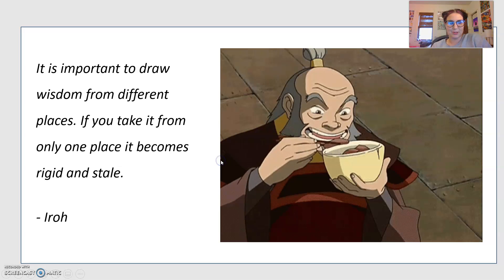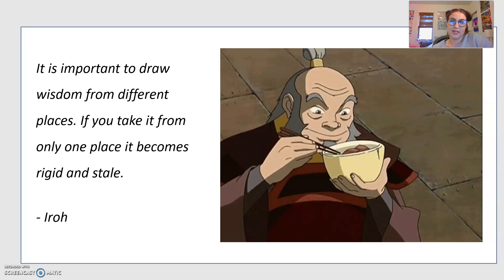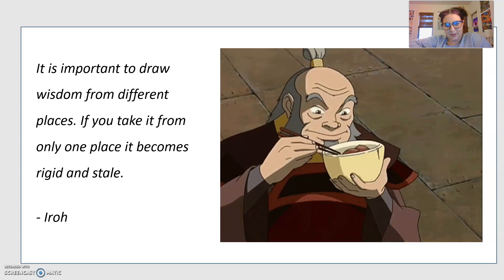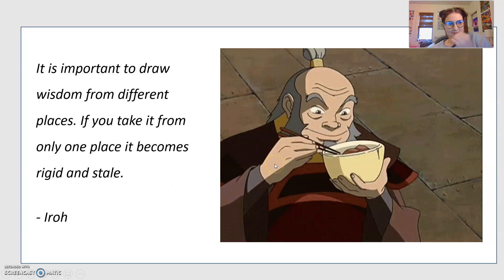I wanted to start today with some words of wisdom from Uncle Iroh from Avatar the Last Airbender. He said it is important to draw wisdom from different places — if you take it from only one place, it becomes rigid and stale. I interpret this as: don't just go to one place for all your answers. Wisdom can come from all different parts of life, maybe some that you might not expect. Some good words to get us started.